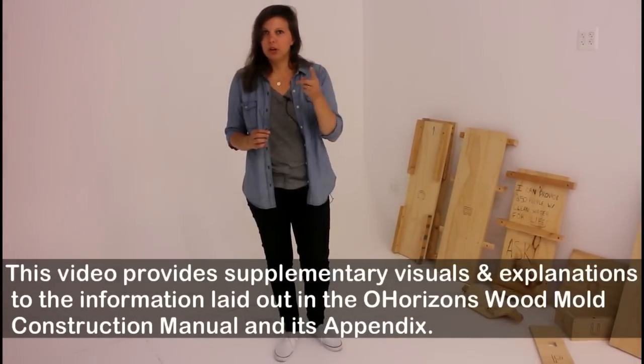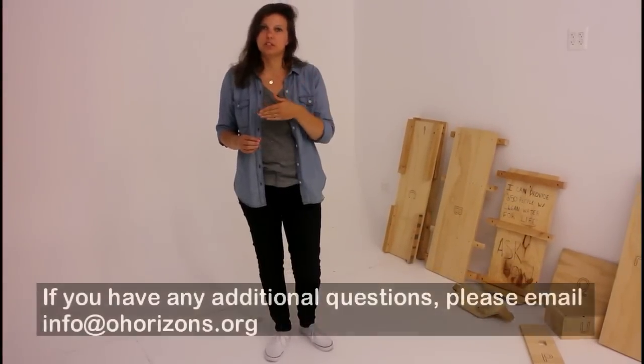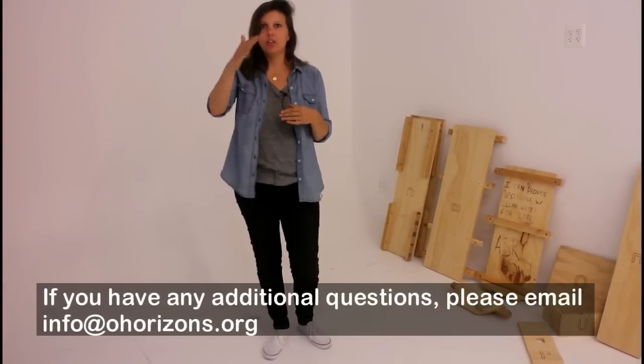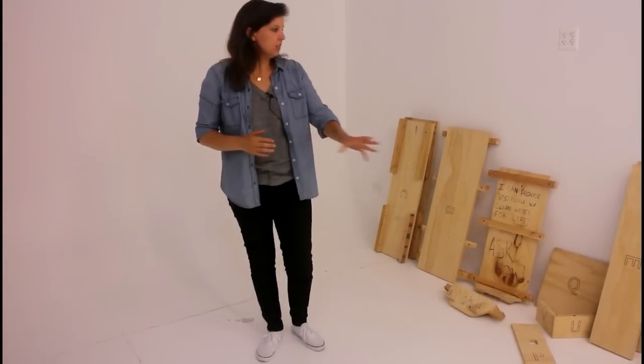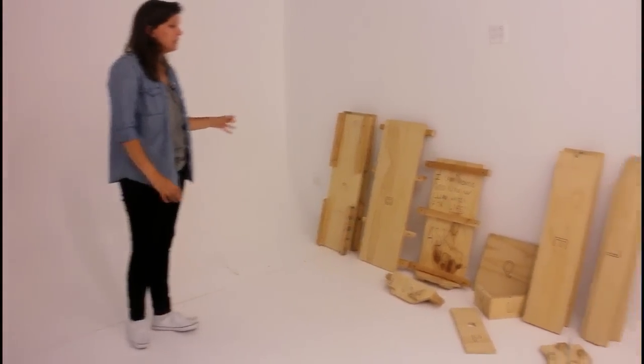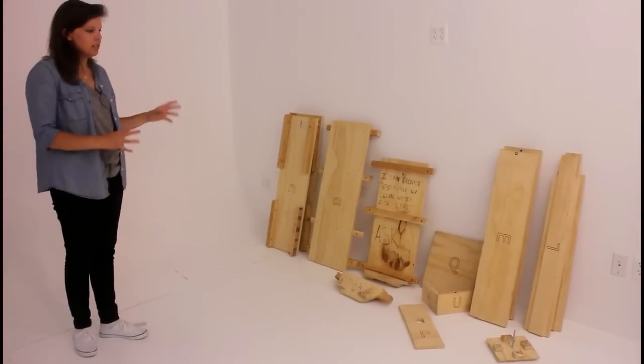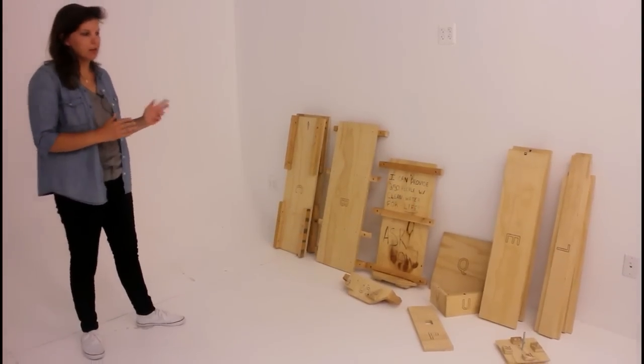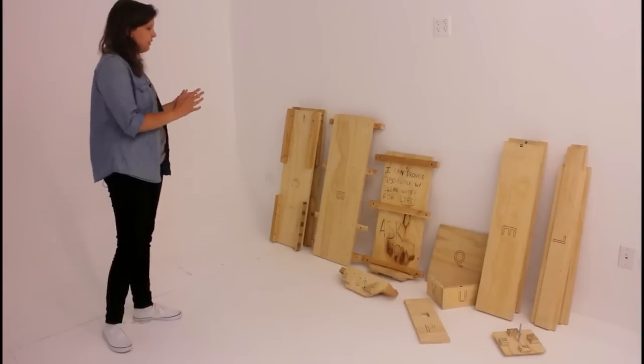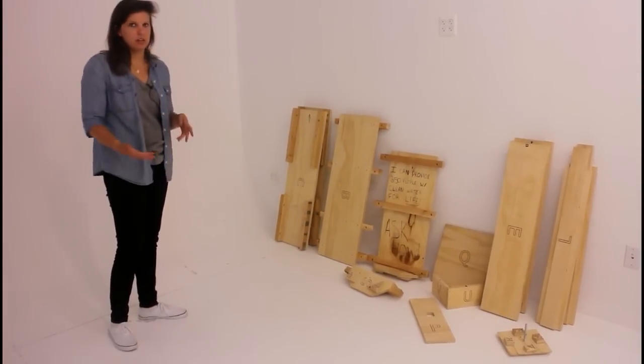So you've gone through section one which is cutting the plywood, section two which is the support construction, all the way down to section nine which is hardware installation. These are all of the completed parts. There are 13 separate parts of the wood mold. I'm going to start with the outer shell and then work my way down to the inner core.